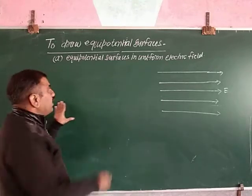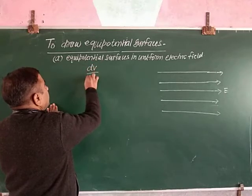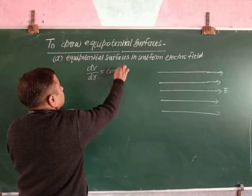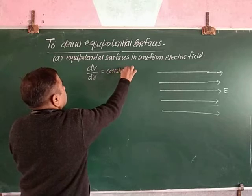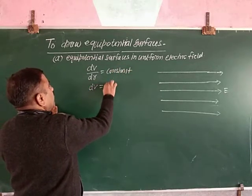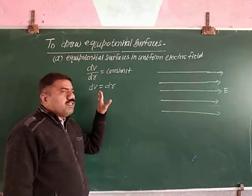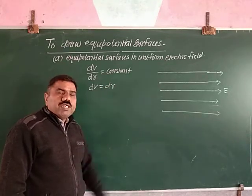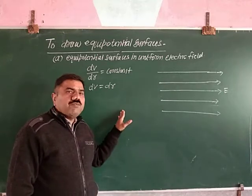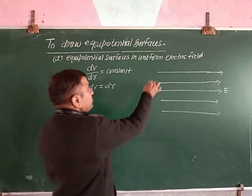For a uniform electric field, dv upon dr is equal to a constant. That is, dv is equal to dr. This means the equipotential surfaces in a uniform electric field have equal spaces between them.